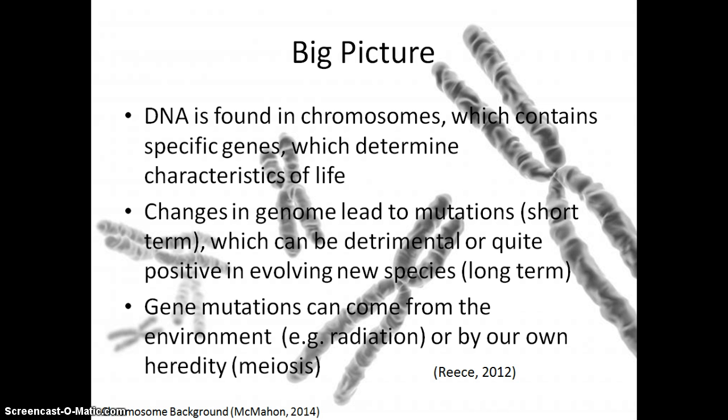Gene mutations can come from the environment through radiation or other means, such as heredity, which is our own process of reproducing organisms through meiosis.